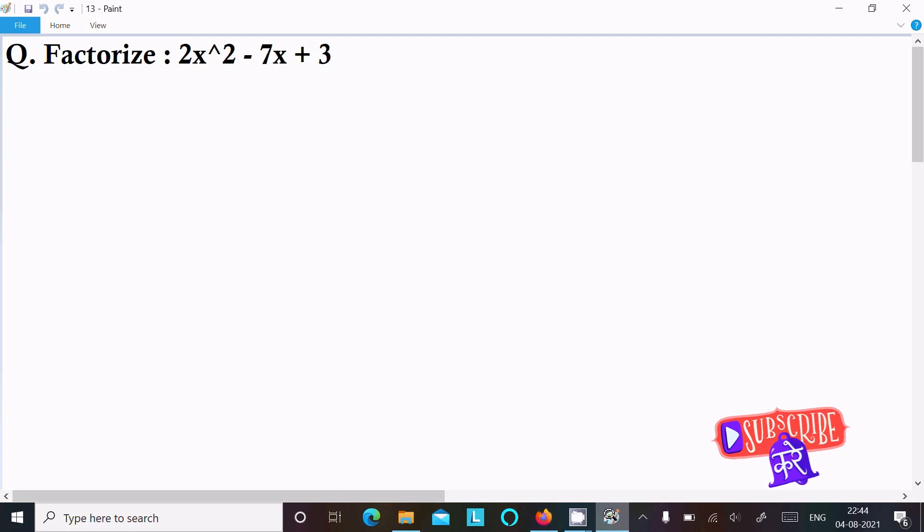In this video lecture, I am going to factorize 2x² - 7x + 3. Let's see the answer. First, writing the given expression 2x² - 7x + 3, so we can easily achieve the output.